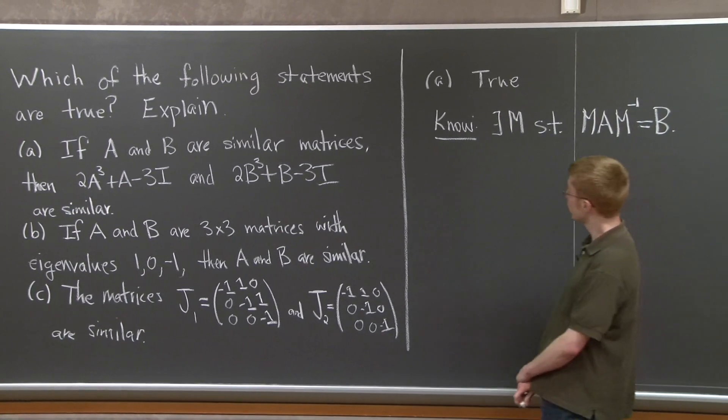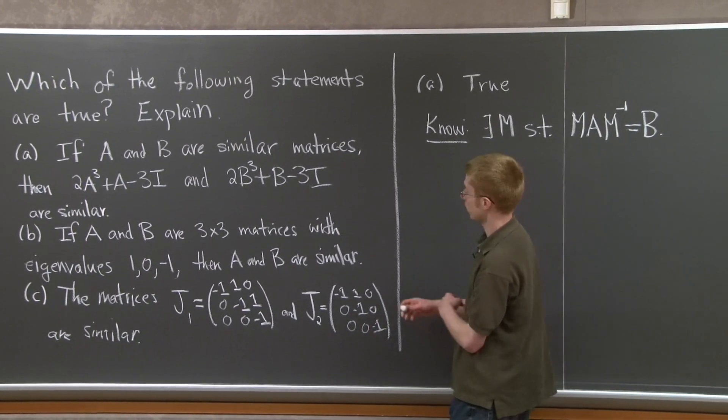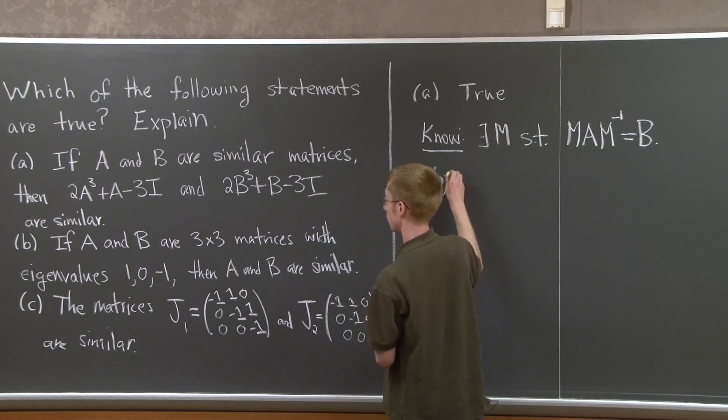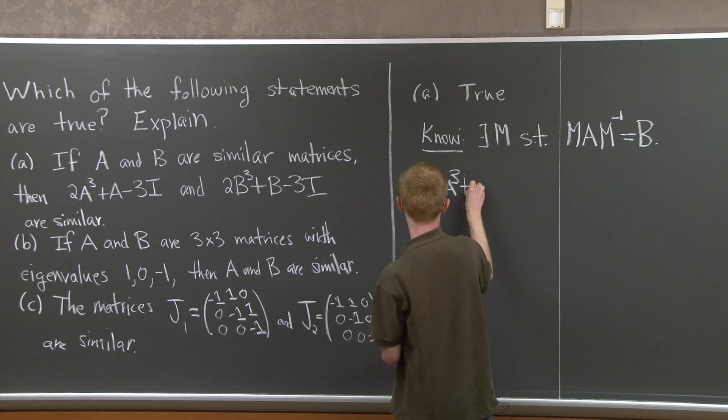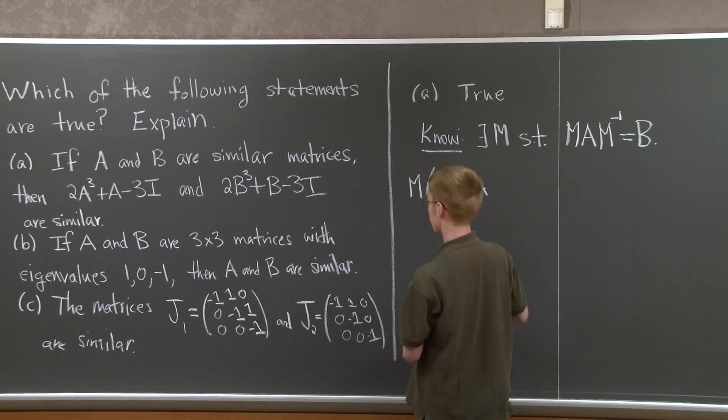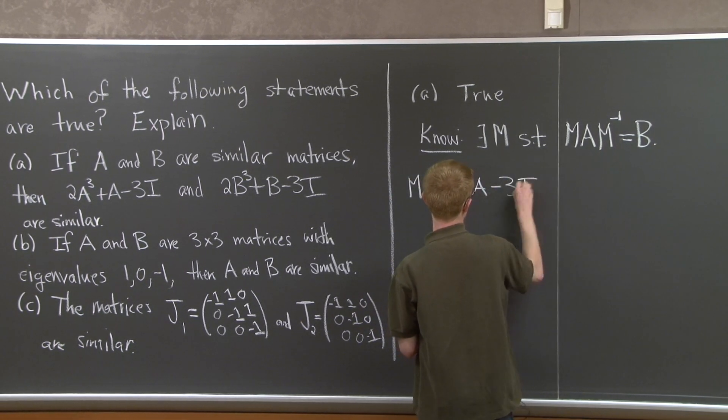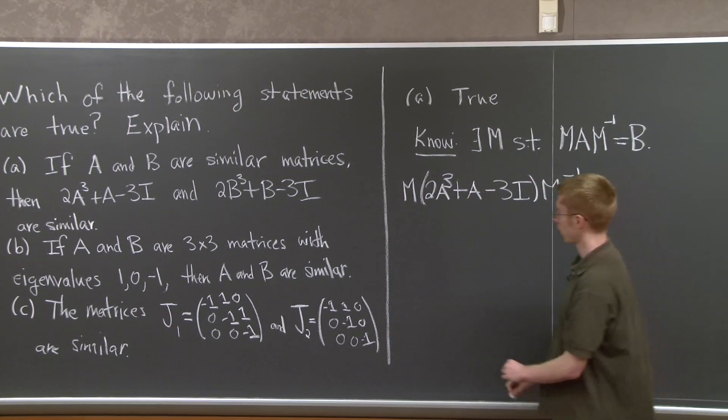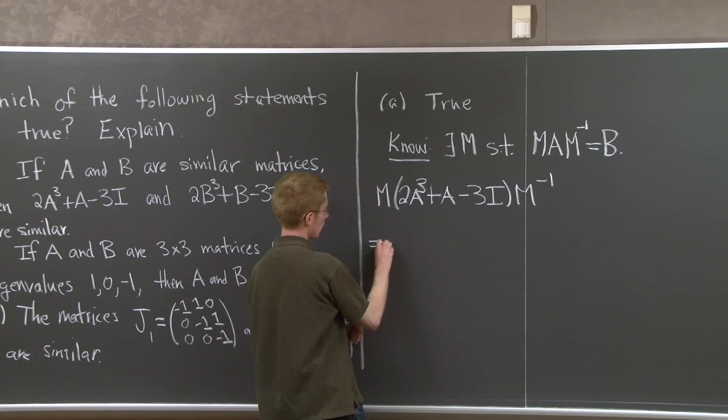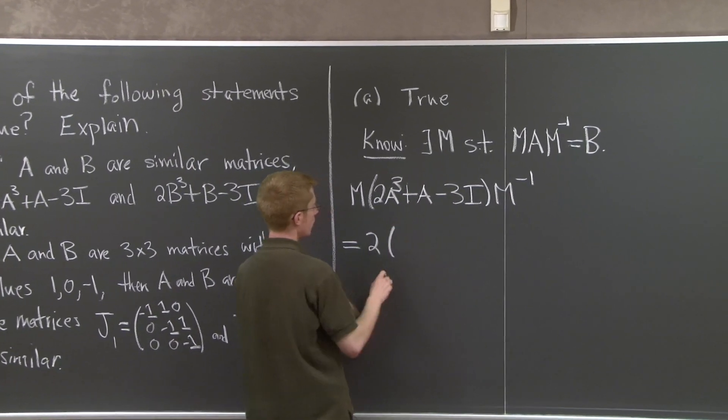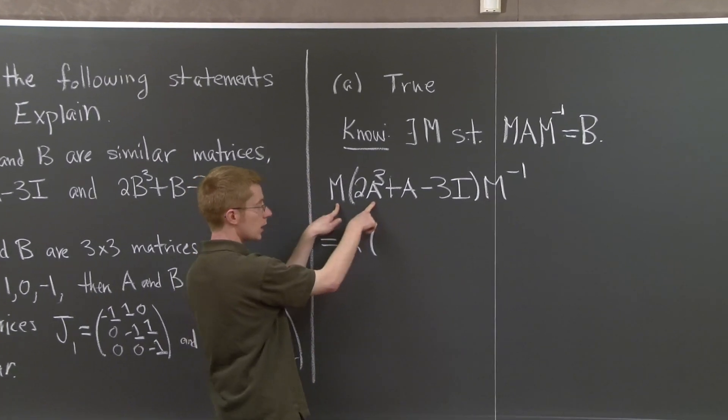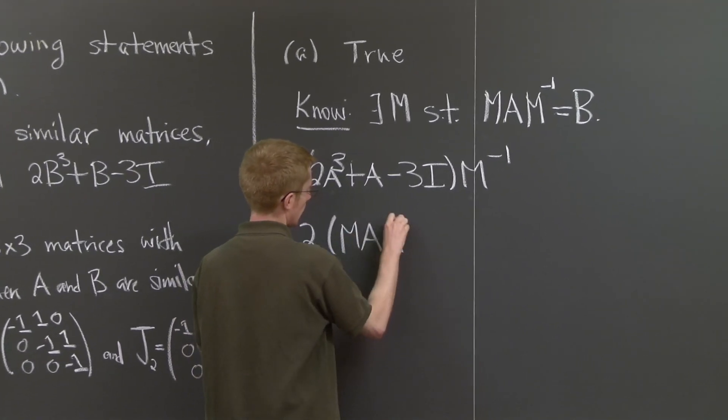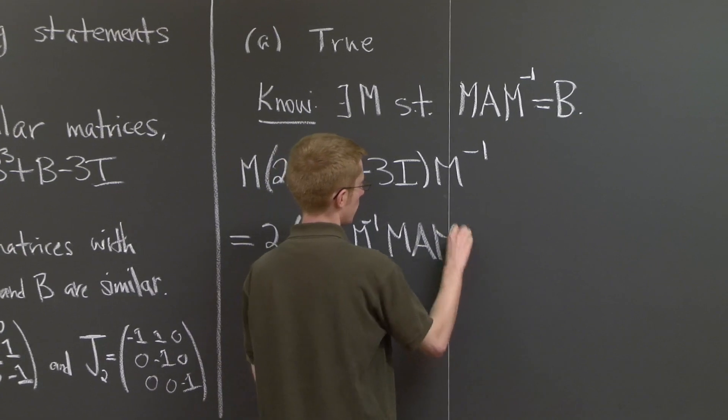So let's take that same matrix M and multiply it on the left and the right of 2A³ + A - 3I. What do we get here? Well, the point is M times A³ times M inverse, we can just write that as 3 MAM inverses.